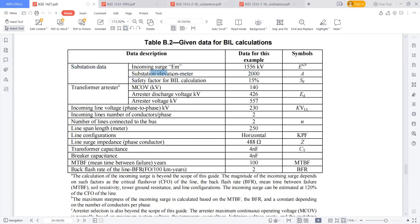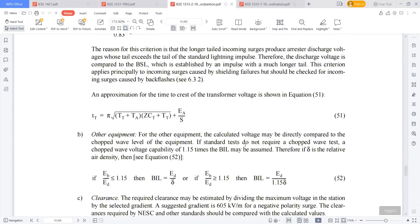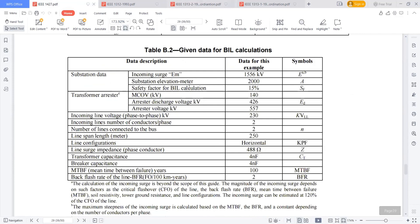What is the substation elevation? 2000 meters. To calculate the CFO, it was given in the IEEE part two. It was mentioned here how to calculate the CFO. Substation elevation is suppose my substation is at 2000 at a high level.